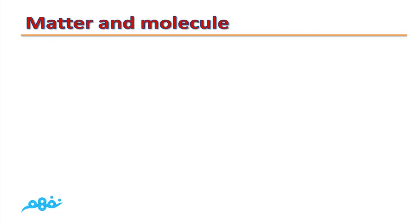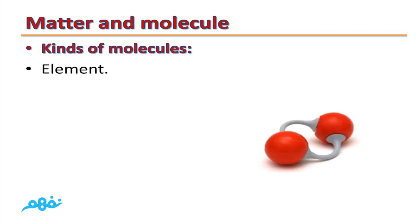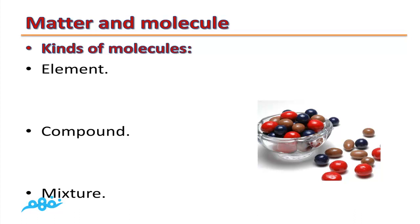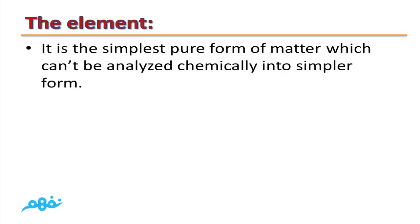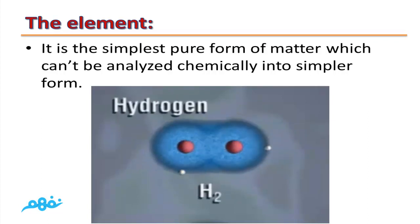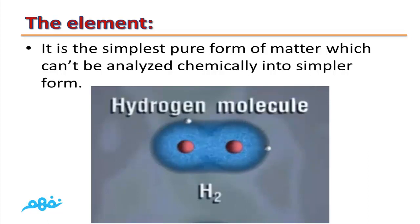Kinds of molecules: we have three kinds — element, compound, and mixture. We will talk only about elements and compounds. What is meant by element? It is the simplest pure form of matter which can't be analyzed chemically into a simpler form. For example, the simplest form of hydrogen is the hydrogen atom, which can't be analyzed into a simpler form. A hydrogen molecule is composed of two hydrogen atoms.